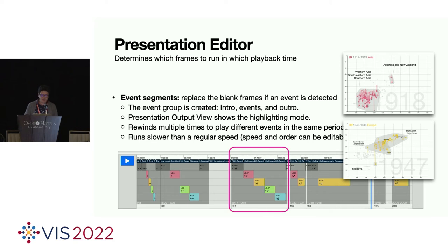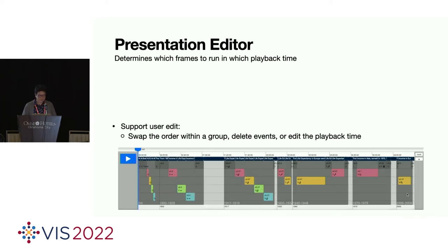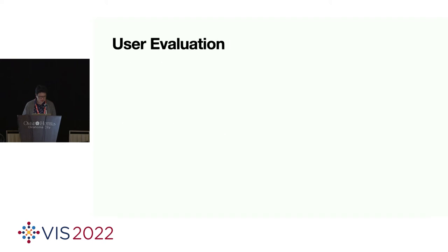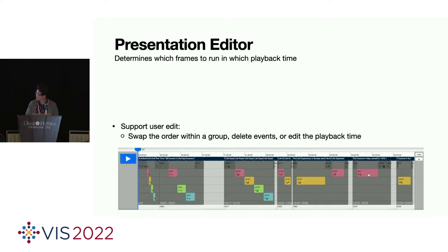And when this part of events is played, the presentation map view shows the highlighting mode. And when the animation is played here for events, it automatically rewinds multiple times to play different events in the same period. So the top one shows the events about Asia. The bottom figure shows the events of Europe. So when the animation is played for these events, it runs slower than a regular speed. And also users can edit the presentation in the view. Users can swap the order within a group, delete events, or edit the playback time.